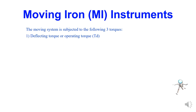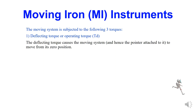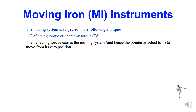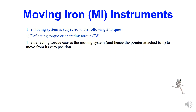Let us explain briefly about each torque. First, deflecting torque — the deflecting torque causes the moving system to move from its zero position. In the previous slides, I have shown a meter that is rested on zero position. When a signal is applied across the probe, the pointer moves — it is deflected from its zero position to some scale reading. We call this deflecting torque.